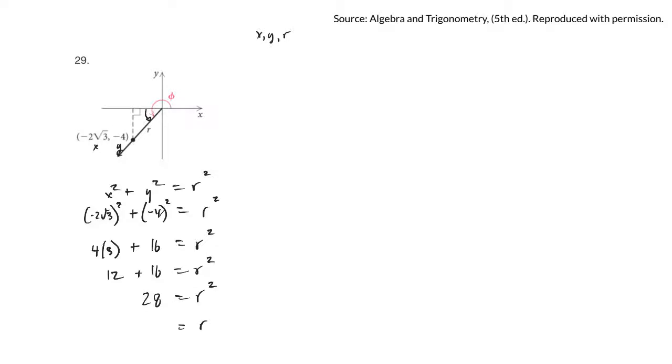That will be 28 is r squared. So r is the square root of 28, and 4 will divide into that, so I would call it 2 root 7. That's what r would be.